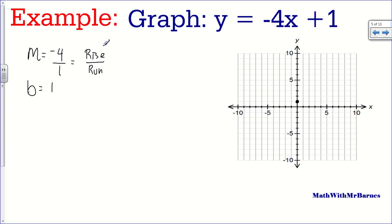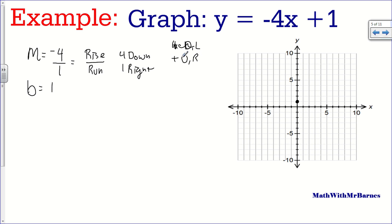Because my rise is negative, that means I go 4 down. And because my run is positive 1, that means I go to the right. So to clarify: plus means up or right, and negative means down or left. So from my starting point, I go 4 units down — 1, 2, 3, 4 — and then 1 unit right. That gives me my second point.